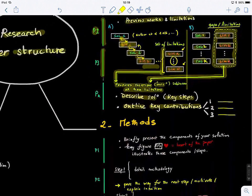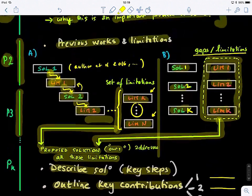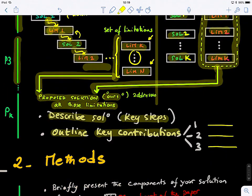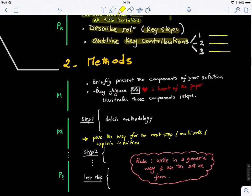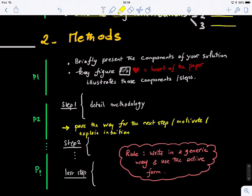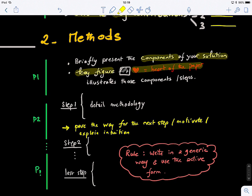Now let's look at the methods section. After reading the introduction, the reader wants to learn about the proposed solution. In the first paragraph of the method section, you briefly present the components of your solution or proposed method. You can also link to your key figure — I always call it the heart of the paper — because you want your figure to be catchy, comprehensive, and very clear, explaining all the steps of your proposed solution. In the first paragraph, say: here's what we propose, Figure 1 shows the different steps, and give a broad overview.